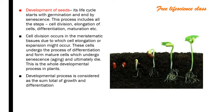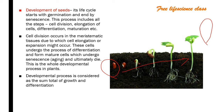When we sow a seed in the soil, it will germinate and produce a new plant. In its life cycle, after full growth of the plant, senescence will come — that is why leaves fall. This process includes all the steps: cell division, elongation, differentiation, maturation, etc.